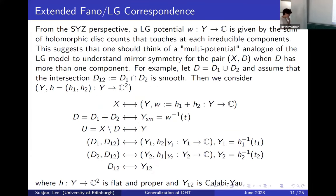From the SYZ perspective, a Landau-Ginzburg potential is given by the sum of holomorphic disc counts that touch each irreducible component. Now you have more than one irreducible component in the anti-canonical divisor, so we think that we should count discs touching each irreducible component separately.